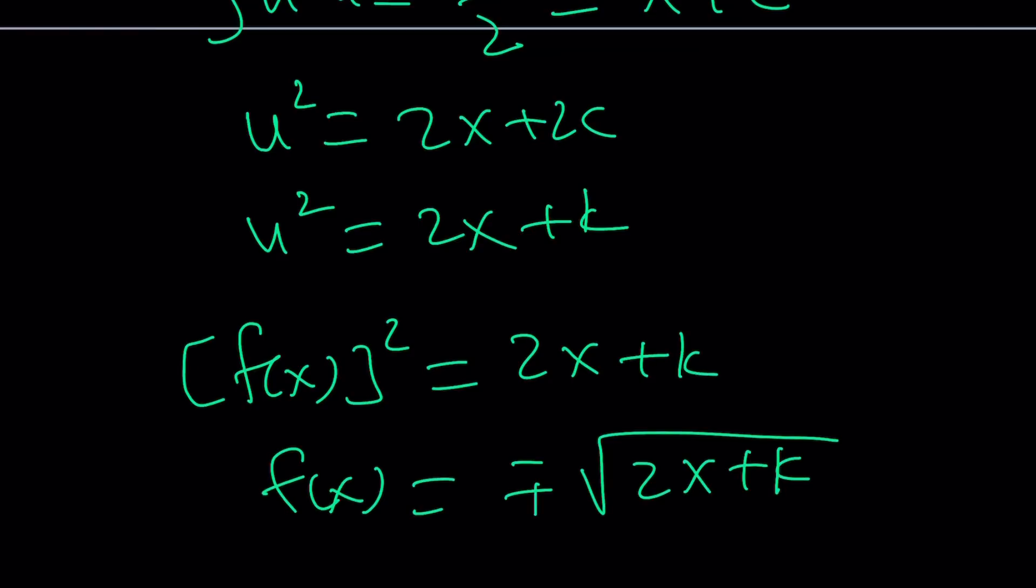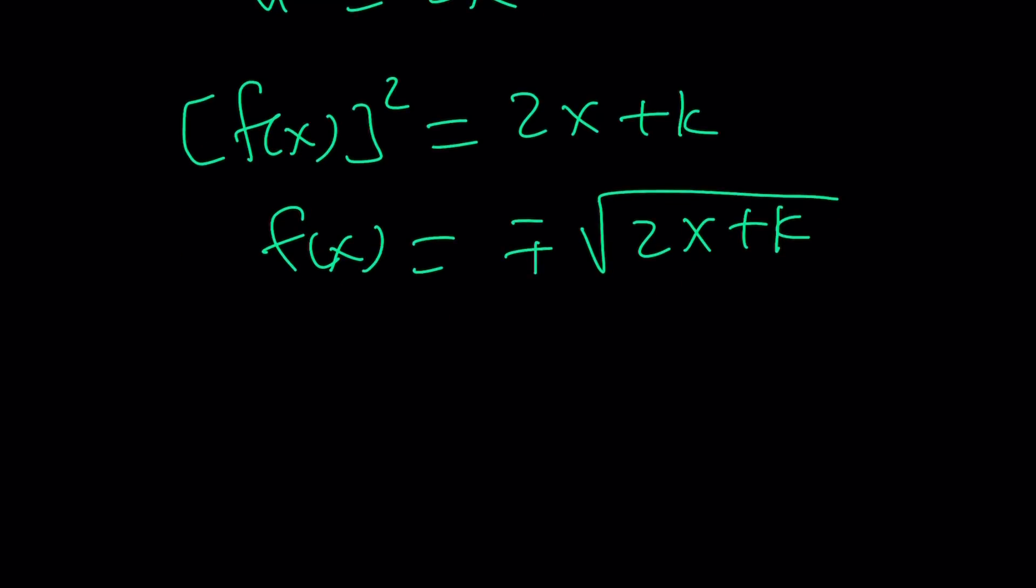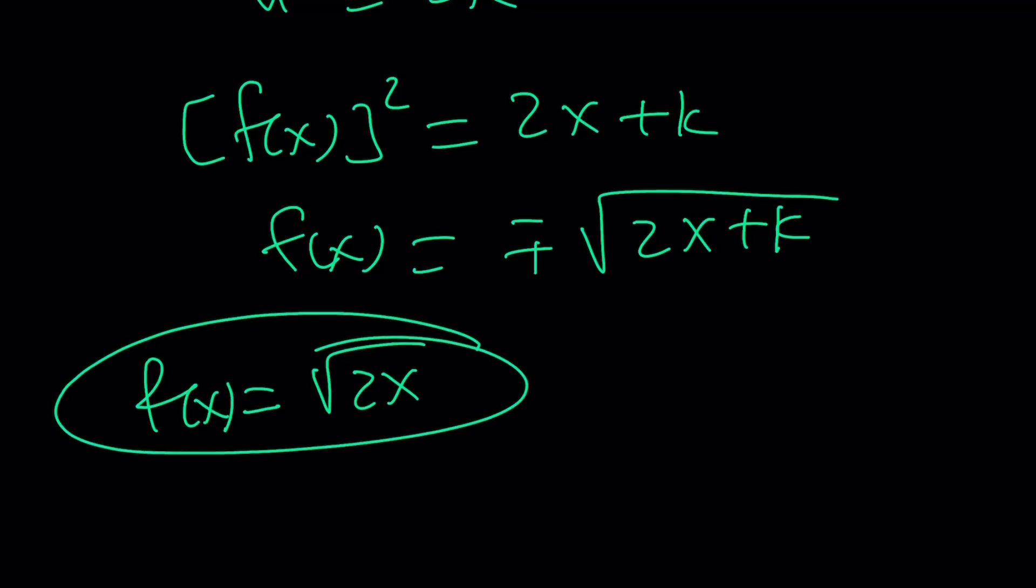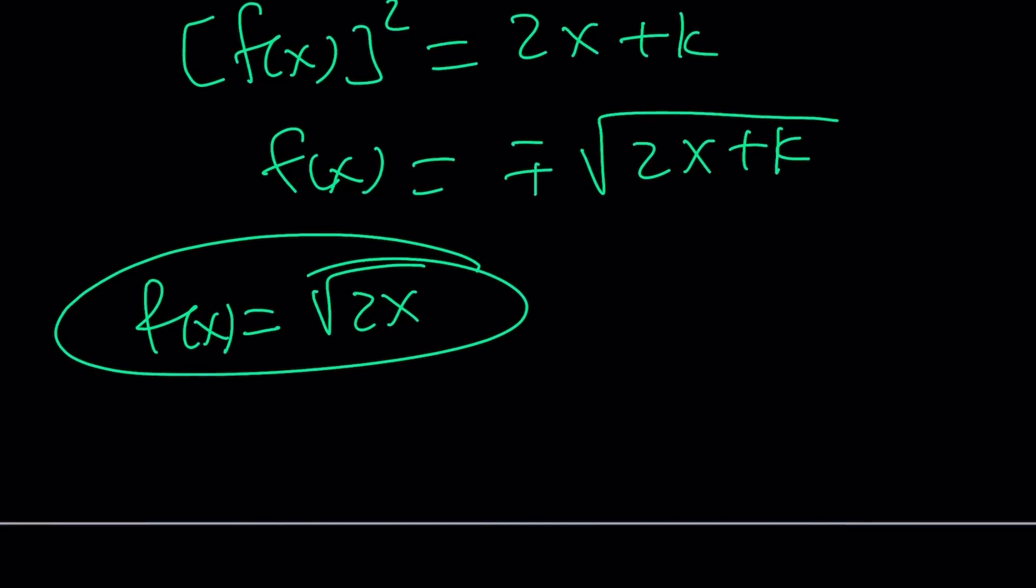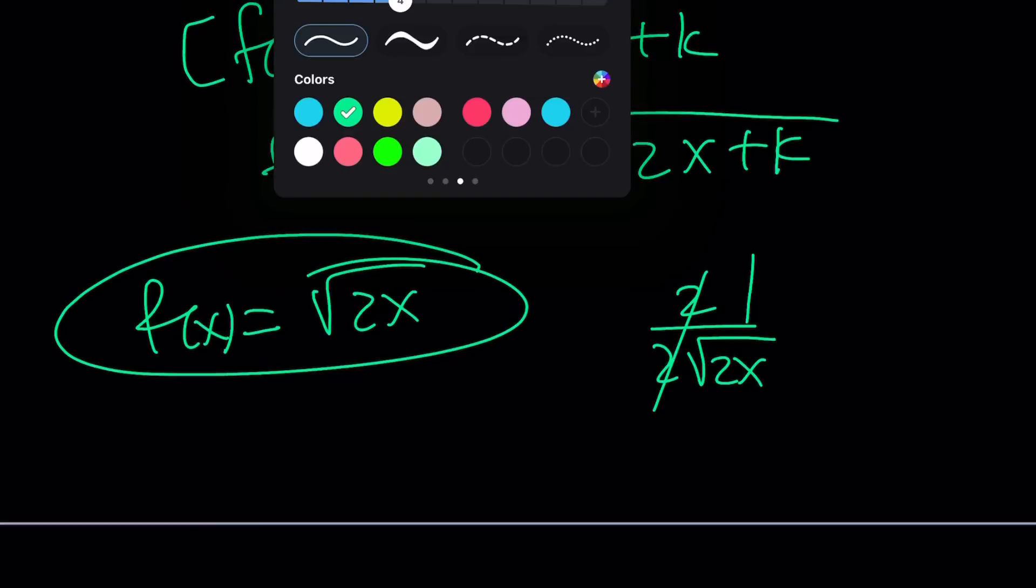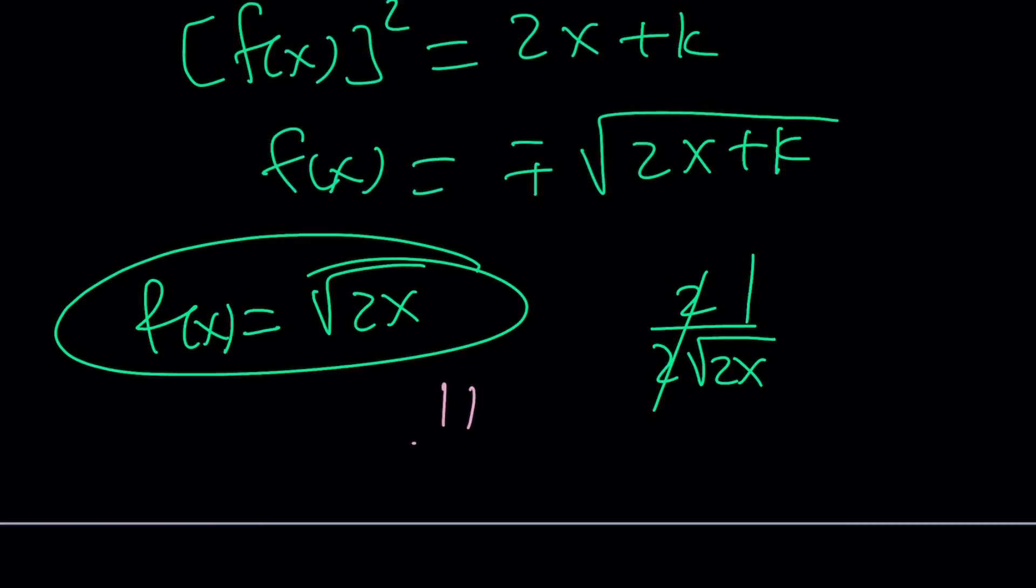So hopefully you're convinced that square root of 2x plus k is going to satisfy and if you wanted to test it out real quick you can actually look at a particular value which is for k equals 0 from the first branch and you can differentiate this radical function: derivative of the inside divided by 2 times this function and as you can see it's the reciprocal. And this brings us to the end of this video.